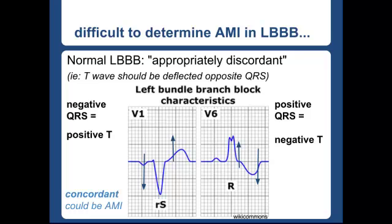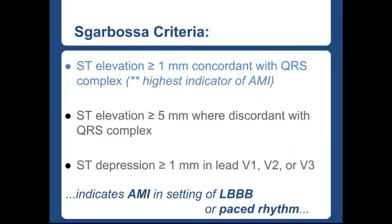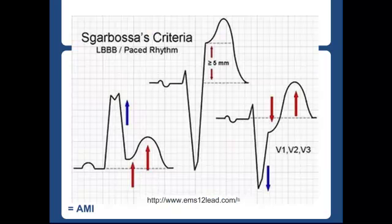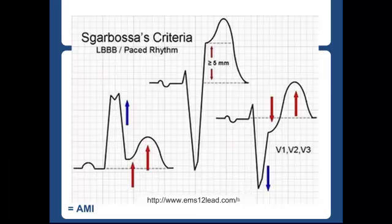If you see a left bundle with concordant waves, that could be very concerning for an acute MI. Here are the Sgarbosa criteria that indicate an acute MI could be present in the setting of either a left bundle or a paced rhythm. The first criterion is probably the most important — it's the highest indicator of acute MI. It's when you have ST elevation greater than one millimeter concordant with the QRS complex. Using a diagram from the EMS 12-lead blog: you have a positive QRS, a positive T wave, and positive J point elevation — that's concordant and the elevation should be greater than one millimeter.